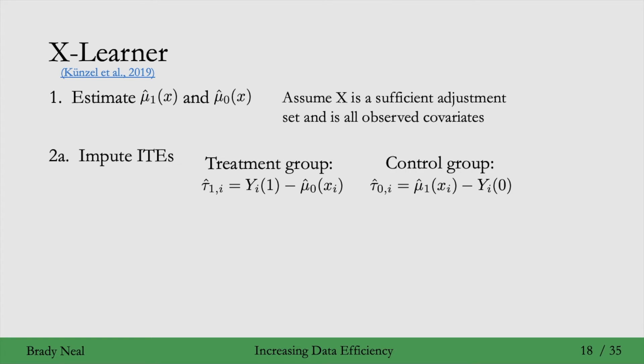Then we do the analog in the control group. For the control group ITEs, we observe the Y0 potential outcome as the observed outcome Y, and then we impute the potential outcome Y1 using the mu1 model that we fit in step one to impute this ITE for the control group as well.